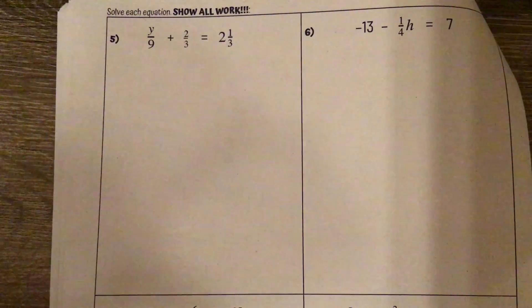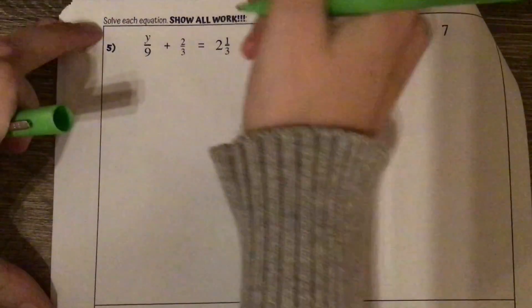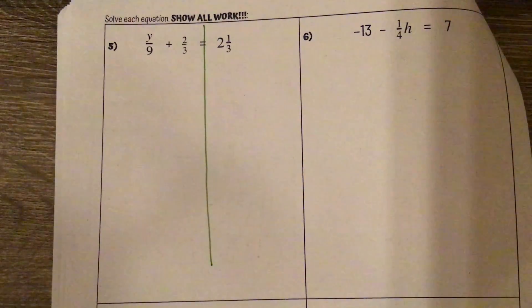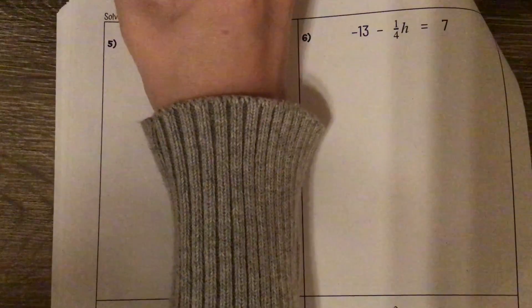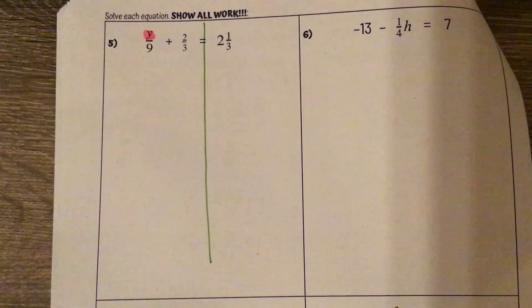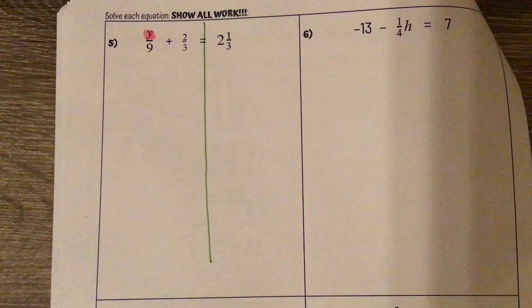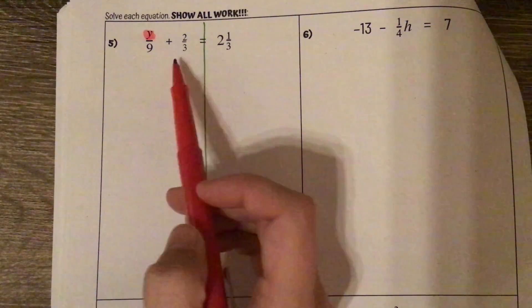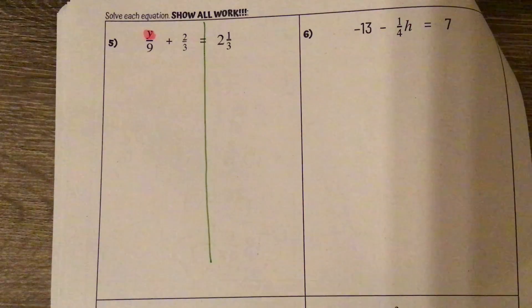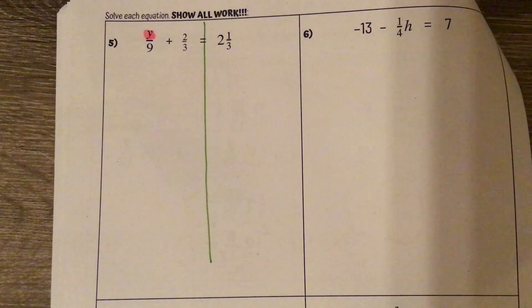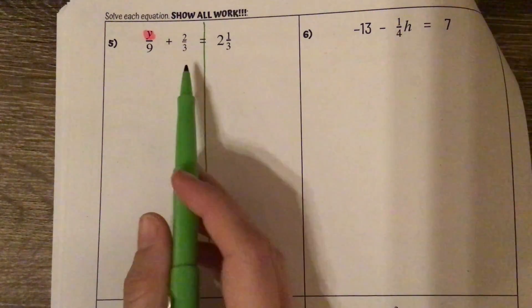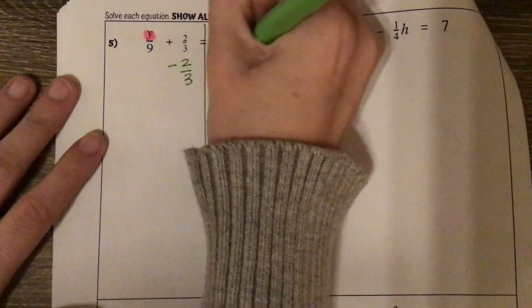Number 5. Drawing my line down the equal sign and highlighting my variable. The operation I see is addition, so I know I'm going to need common denominators. These already have common denominators, so I actually don't need to rework it at all. I'll just start solving. We notice this is a two-step equation, so I'm first going to get rid of my constants. We've got plus two-thirds, so I'm going to subtract two-thirds from both sides.